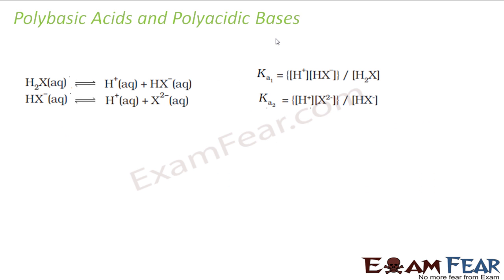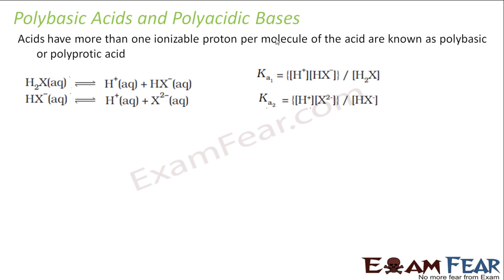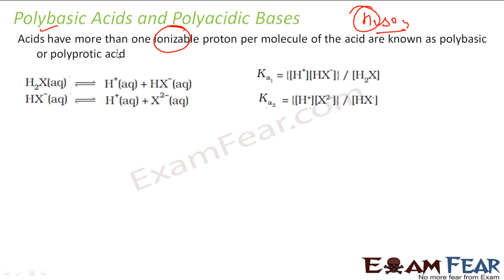Now we'll take polybasic acids and polyacidic bases. So what are these polybasic acids and polyacidic bases? Acids which have more than one ionizable proton per molecule are called polybasic acids.